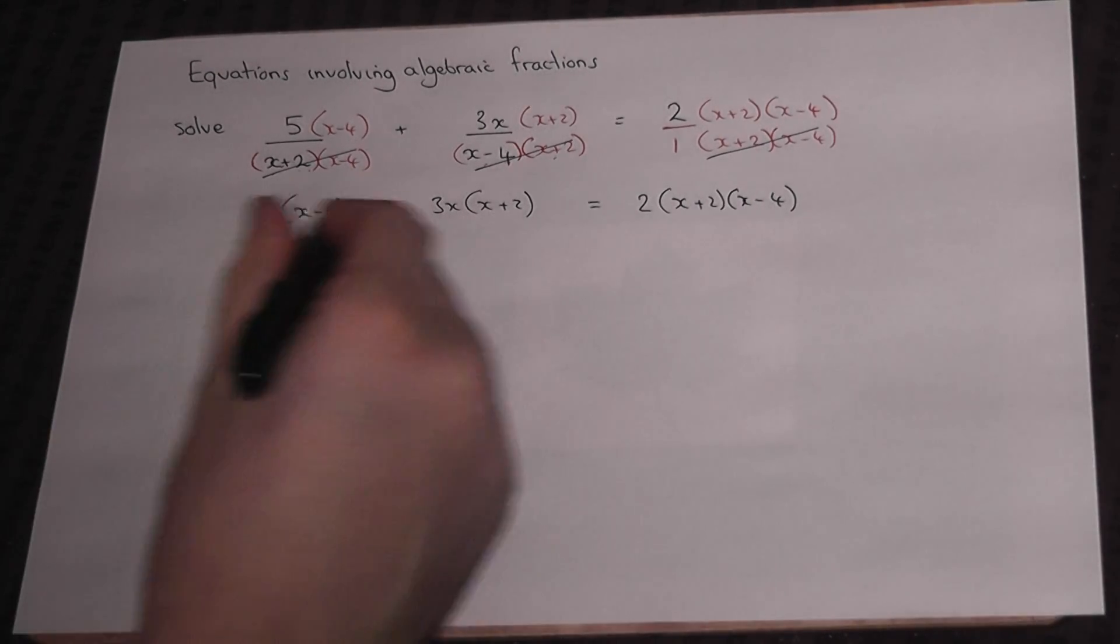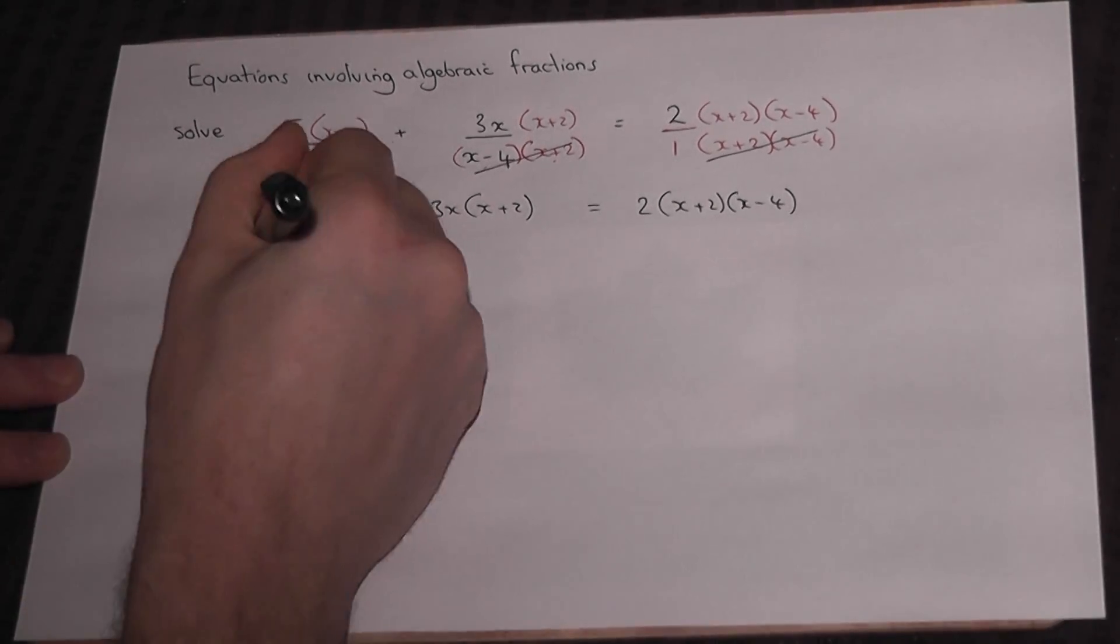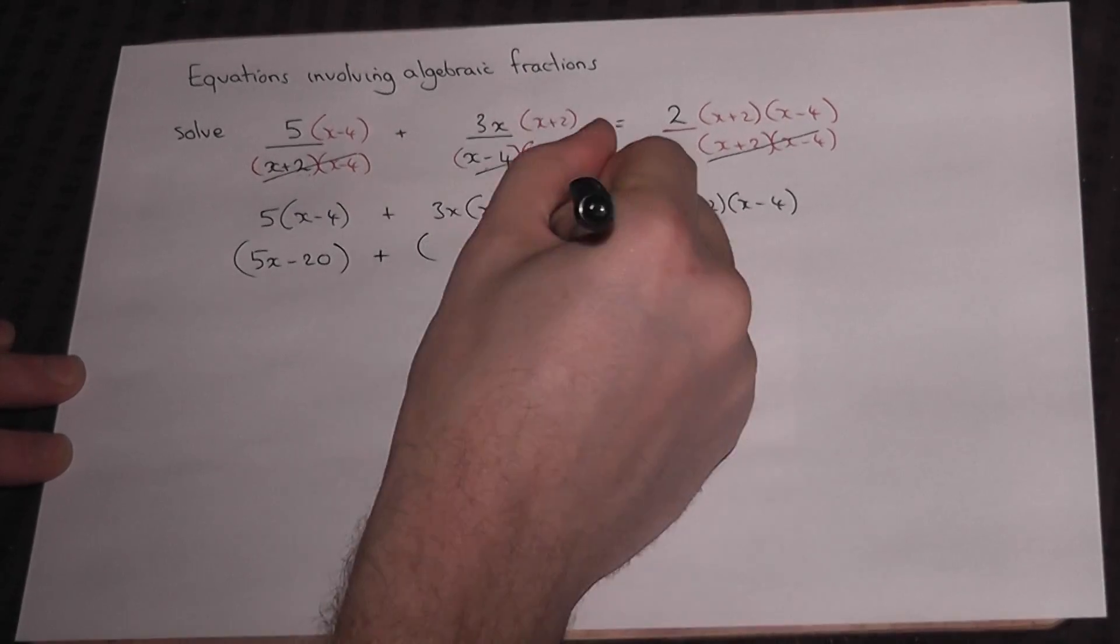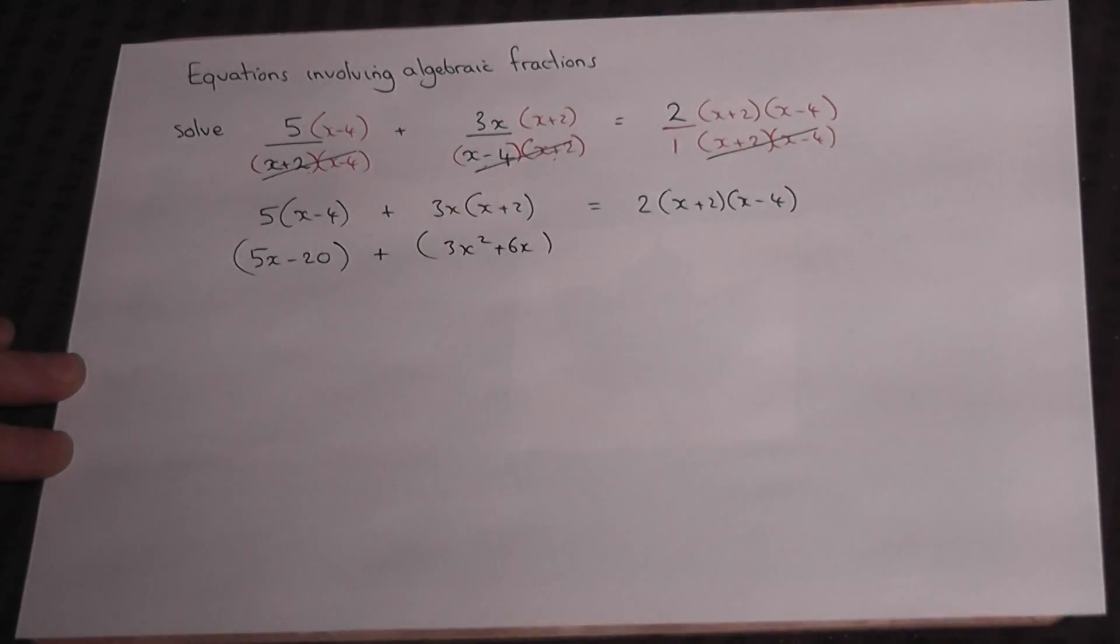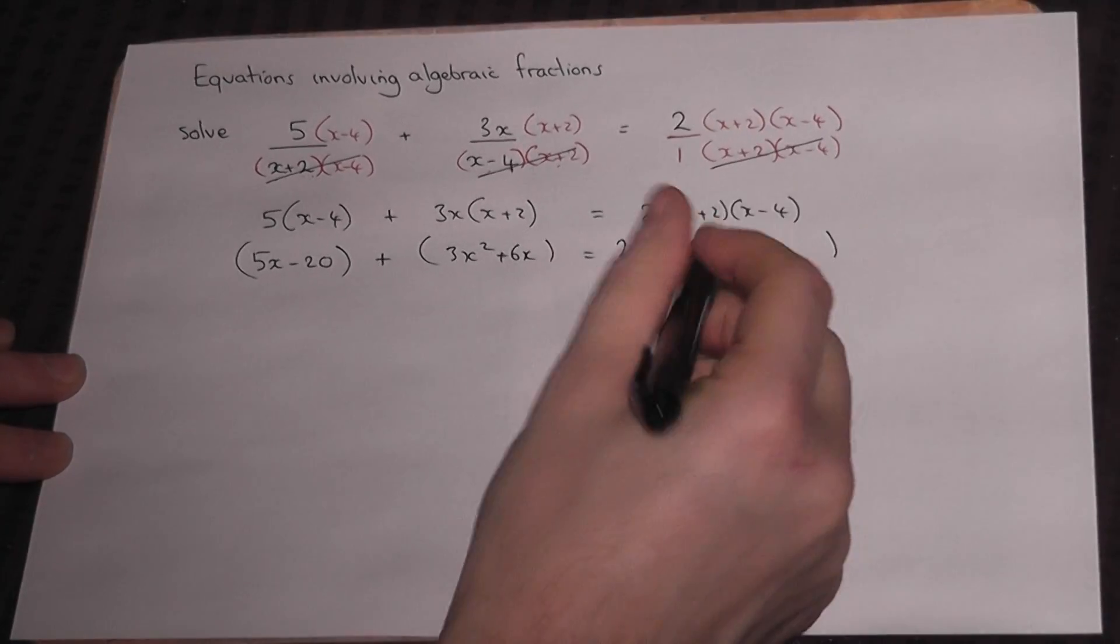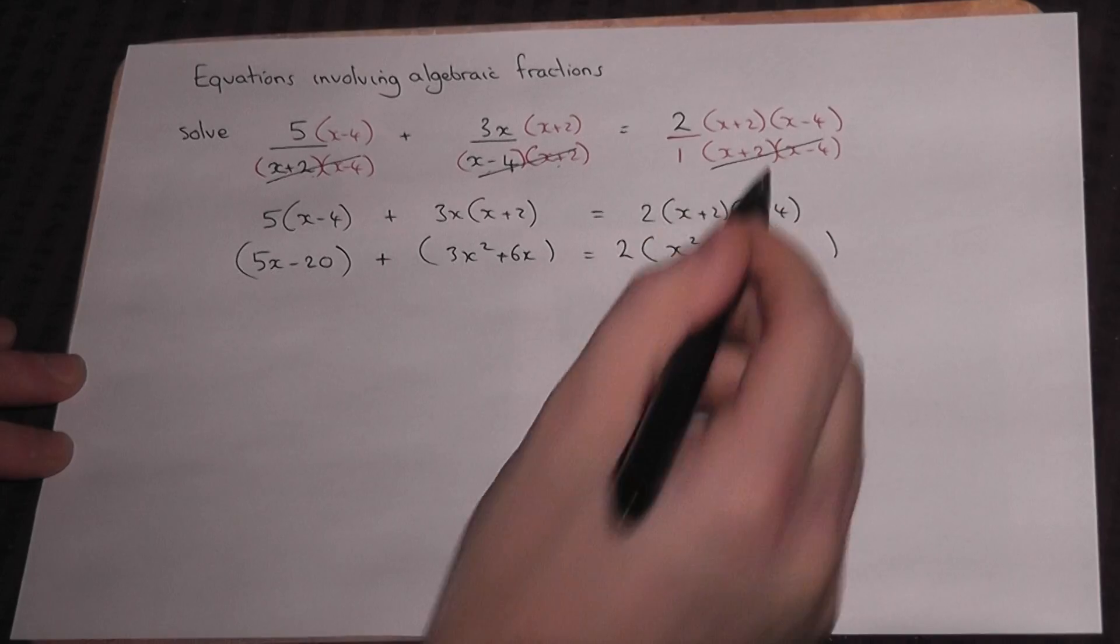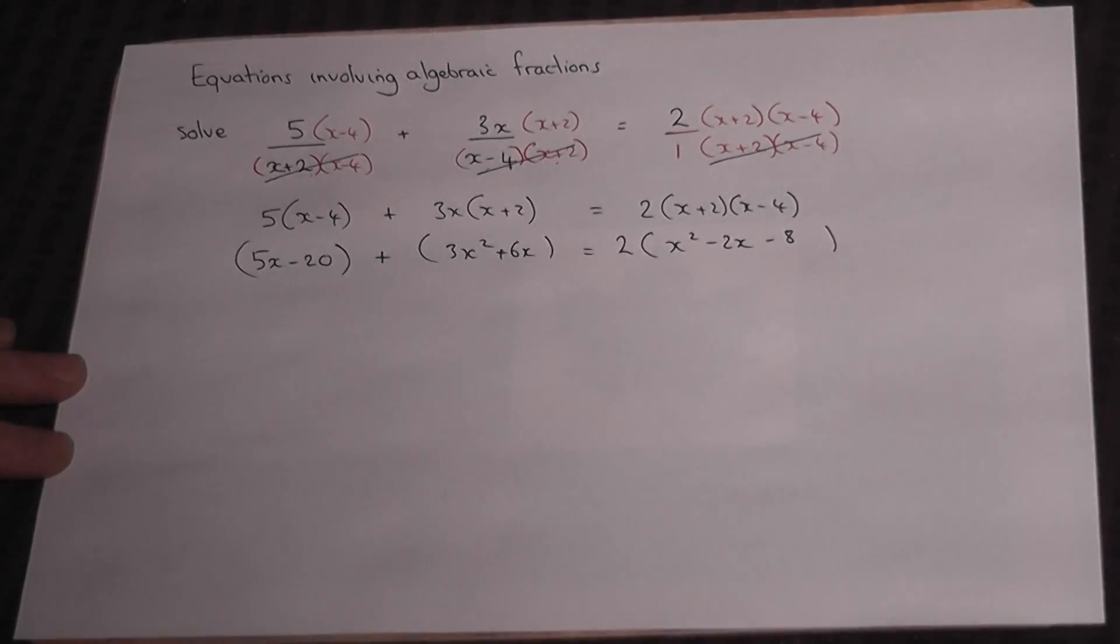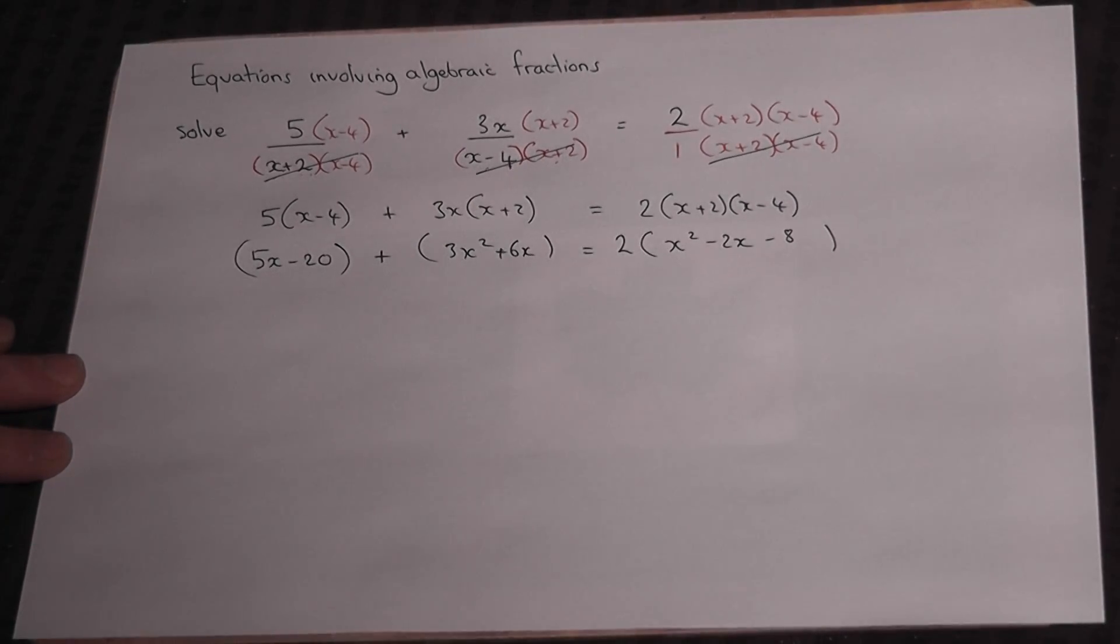To solve this requires us to expand the separate parts. So 5x take away 20 in a bracket, plus the next part 3x squared plus 6x. Now be careful with this part here. There's a 2, then we expand using either a smiley face or foil or grid method: x times x is x squared, 2x take away 4x is minus 2x, and 2 times minus 4 is minus 8.